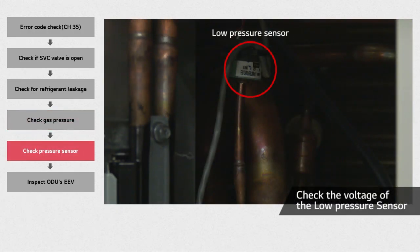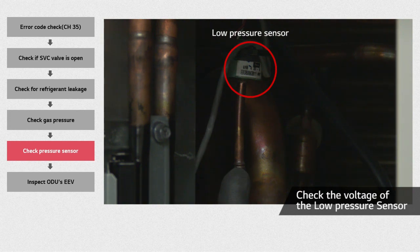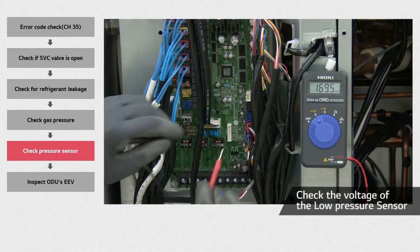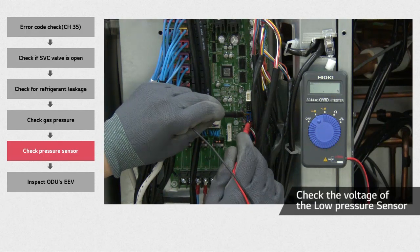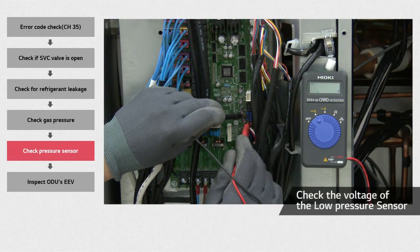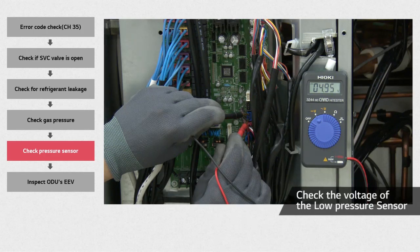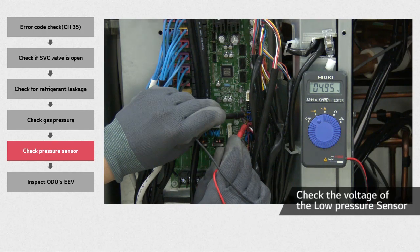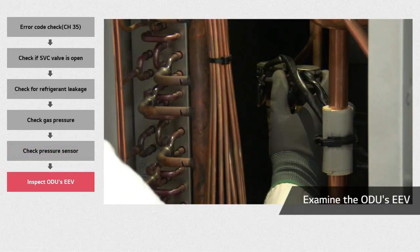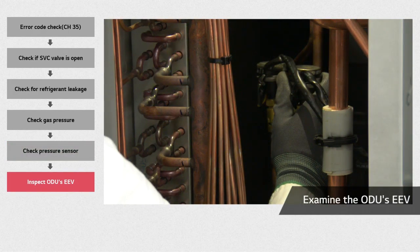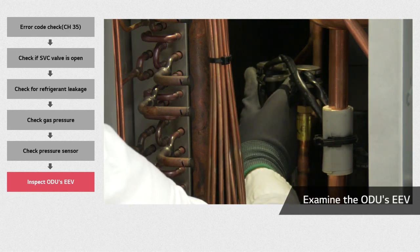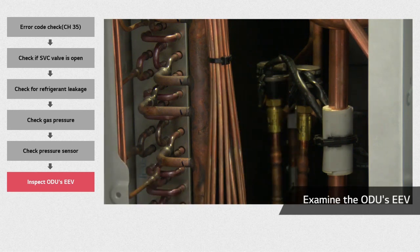Locate the low pressure sensor — it is shown in the image with the white label. Measure the voltage coming from the PCB pressure sensor, then check if the measurement is 5 volts for the blue low pressure connector in the external PCB. Finally, check the outdoor unit electronic expansion valve. When you reset the PCB power, the EEV opens and closes again. You can also feel it vibrating in your hand.